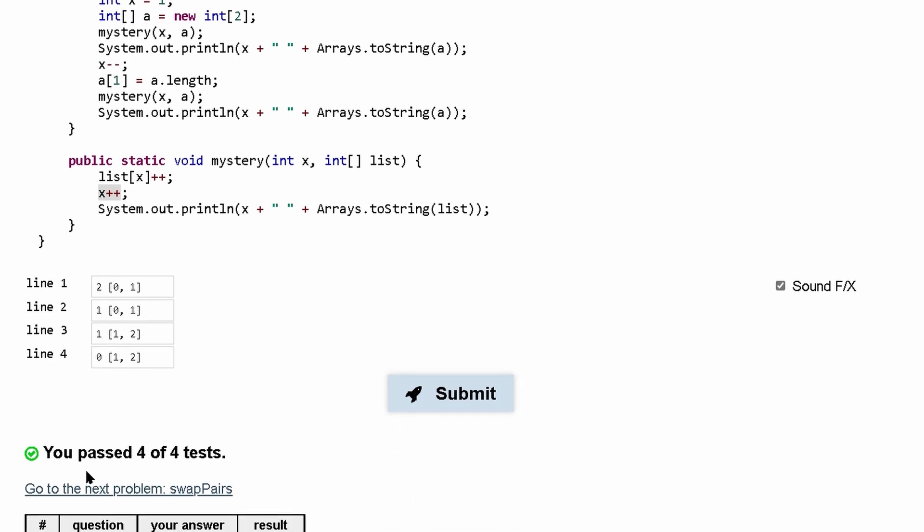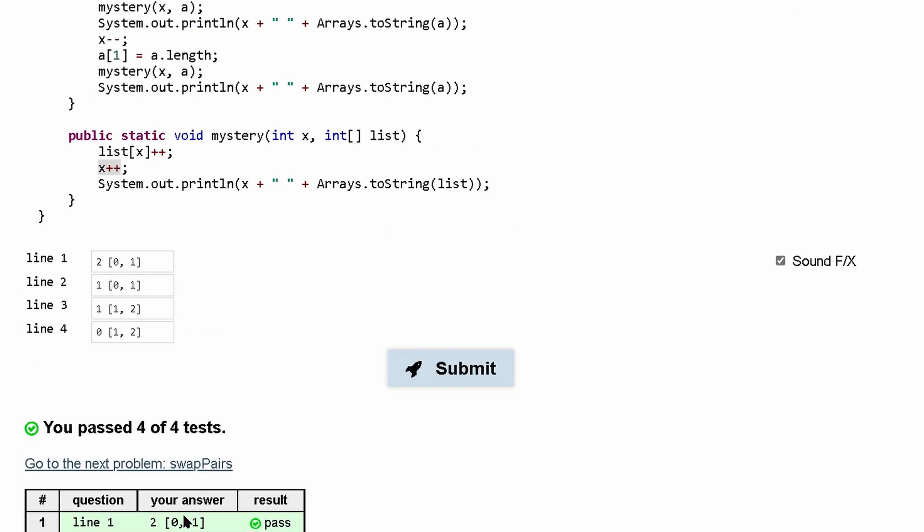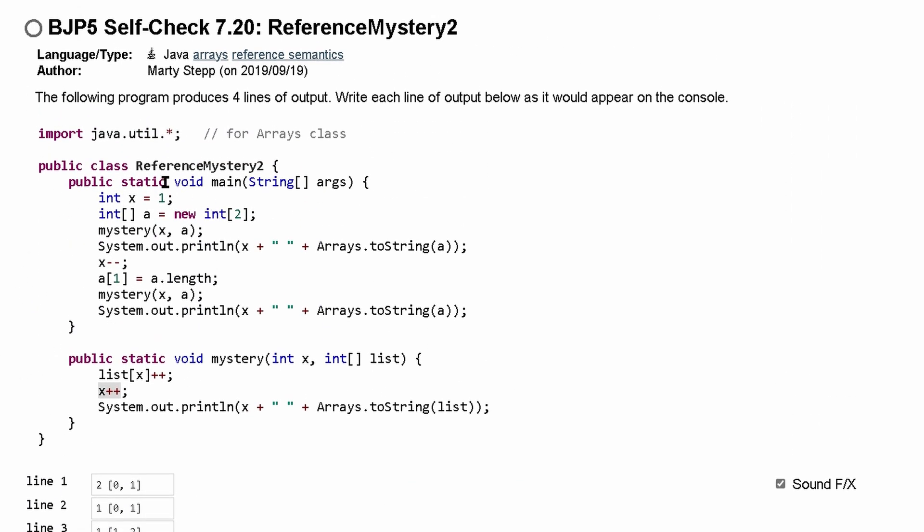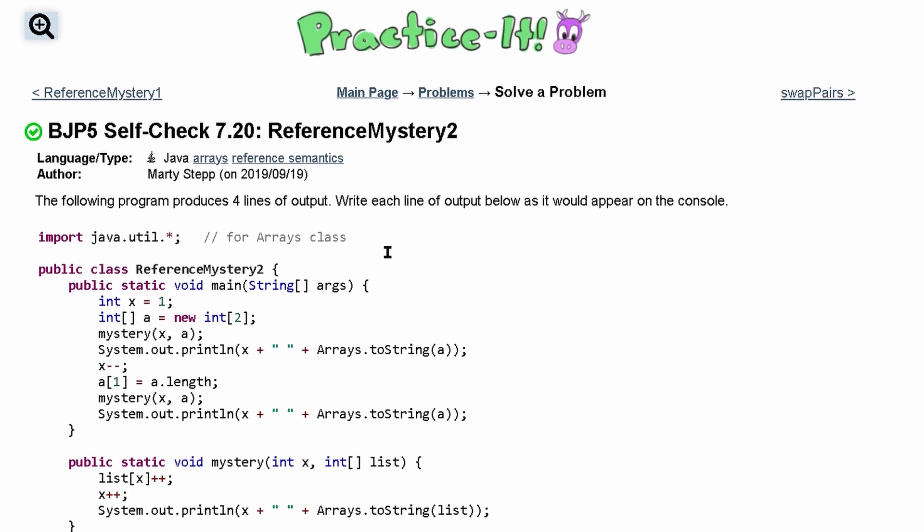And we've passed 4 out of 4 tests. So that is how I would go about looking at this code. Practice-It self-check 7.20 reference mystery 2.